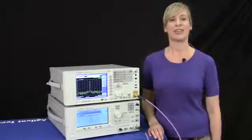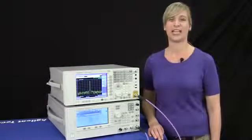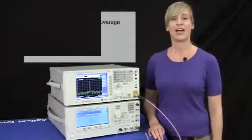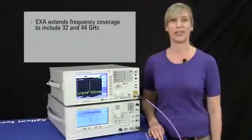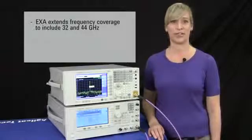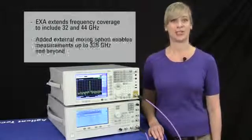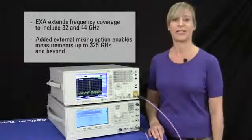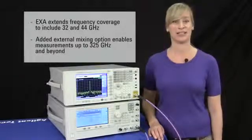Currently, the EXA is offered in 3, 7, 13, and 26.5 GHz frequency options. And now, we're extending our frequency coverage to include 32 and 44 GHz. Plus, we've added an external mixing option that enables you to measure frequencies up to 325 GHz and beyond.